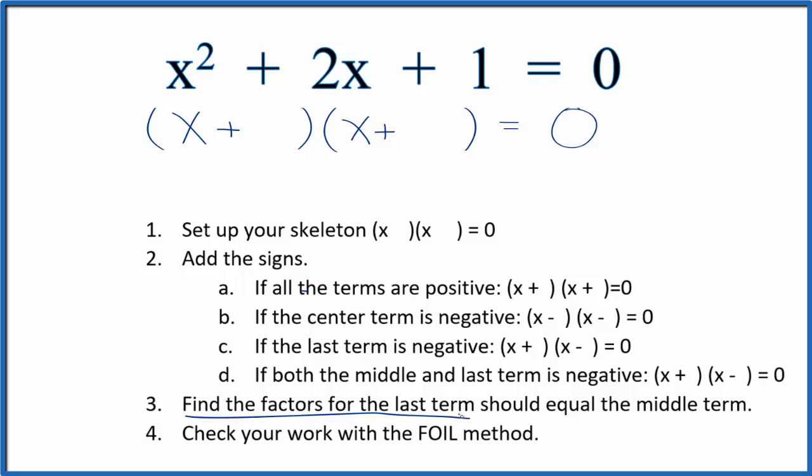Now we can find the factors for the last term and they should add up to the middle term. The factors of one need to add up to two. The only way we're gonna get one is one times one, so that's really all we can put here.